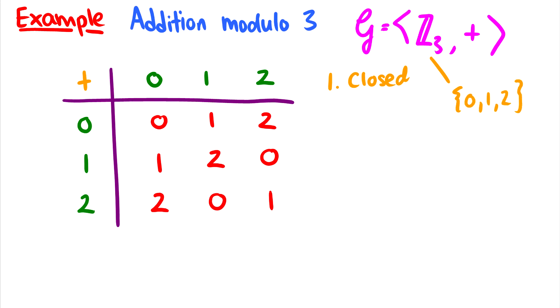And then when we do an operation together, so let's say plus in this case on two elements a and b, it better come back into that set {0, 1, 2}. In fact, if we take a look at the chart here, no matter what we do, we end up with a 0, 1, or 2 back. So it is closed. That's good.